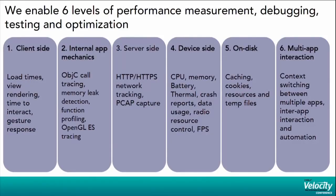At AppPurify, we want to attack the performance measurement problem ground up. We divide the performance measurement of a mobile app — whether a browser, native, or HTML5 app — into six parts. The client side includes your load time, time to interact, and response time to a touch. For in-app mechanics, we have function tracers and Objective-C call tracers which can tell you which line of code in your app is causing a problem.